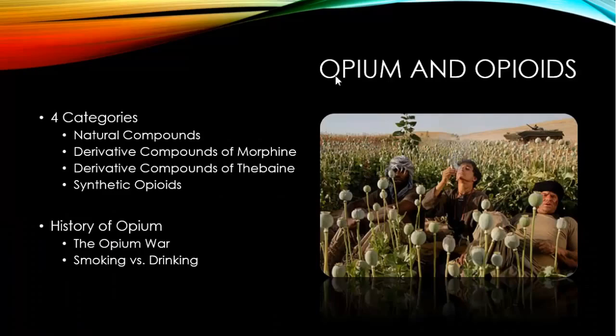Paracelsus promoted himself as the foremost medical authority of his day. He created a mixture of opium, wine, and an assortment of spices called laudanum, which derives from the Latin phrase meaning 'something to be praised.' Thomas Sydenham, considered the father of clinical medicine, introduced a highly popular version of a similar opium drink called Sydenham's laudanum. For 200 years the acceptable means of taking opium among Europeans and Americans was in the form of a drink.